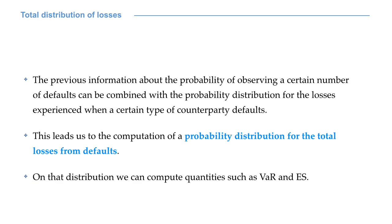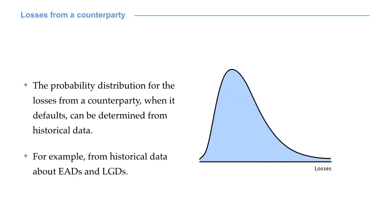The probability of observing M defaults can then be combined with historical information about the probability distribution for the losses experienced when a certain type of counterparty defaults. This leads us to the computation of a probability distribution for the total losses from defaults. On that distribution we can then compute quantities such as value at risk and expected shortfall. And from those quantities we can further obtain our capital requirements, according to our advanced internal rating-based methodology.